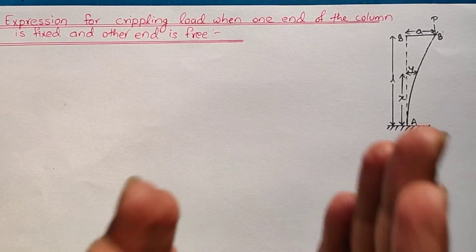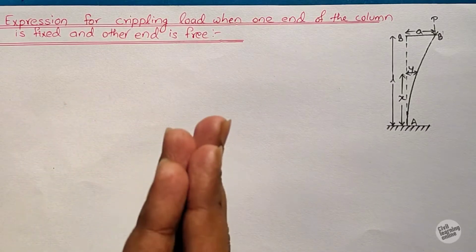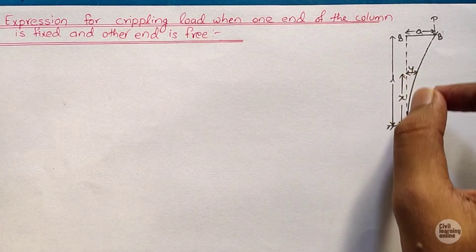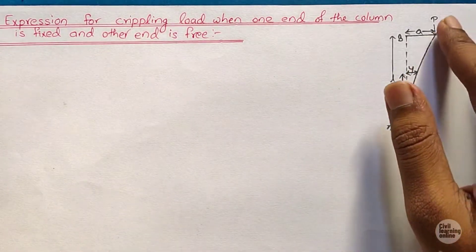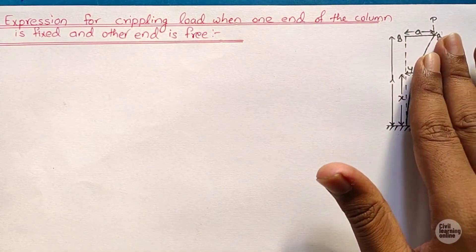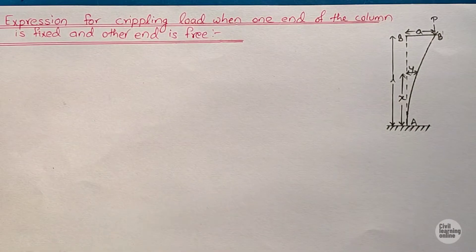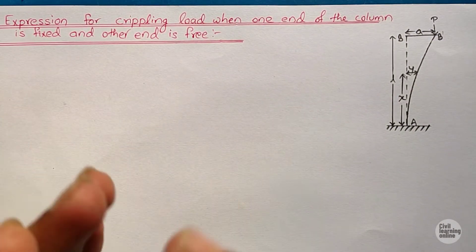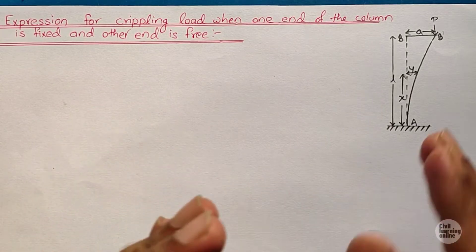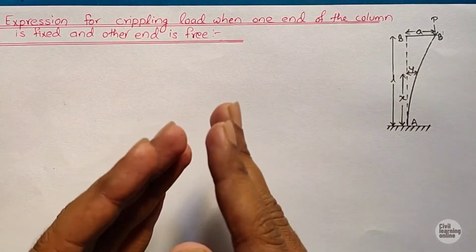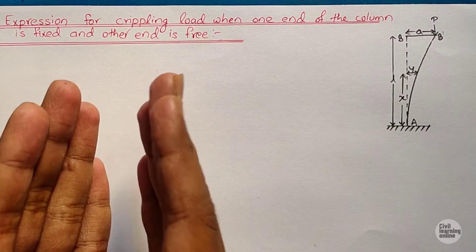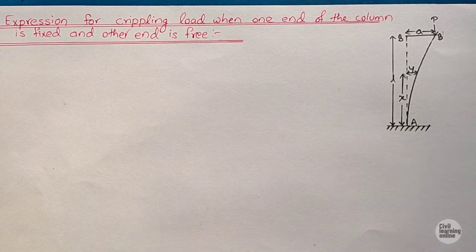Beginning the derivation, we have considered a section at distance x from support A. The deflection at distance x from support A is y. Due to the load P, the free end B is deflected from B to B-dash. Whenever this type of expression is asked in an exam, we need to first describe what the diagram is showing, and then proceed with the derivation.